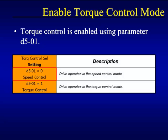The D5 parameter group contains the Torque Control mode parameters. The first parameter, D501, is used to enable the drive to run in either speed or Torque Control mode. Note that the red box around setting zero indicates that the parameter is factory set to this value. Enabling Torque Control is accomplished by setting D501 to setting one.